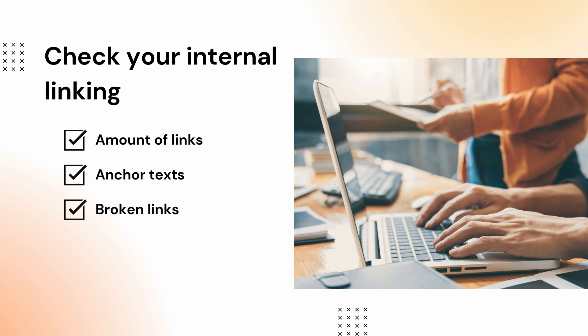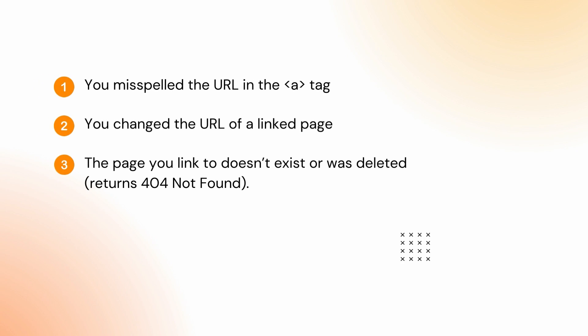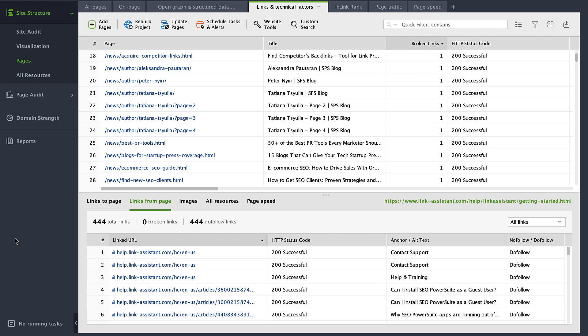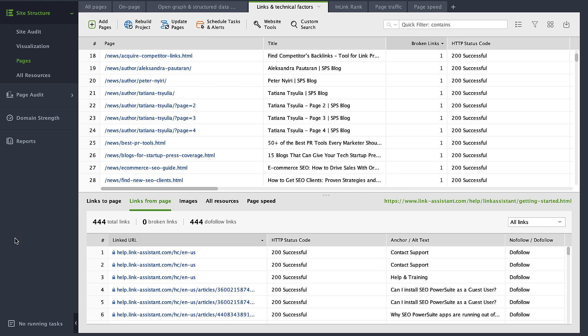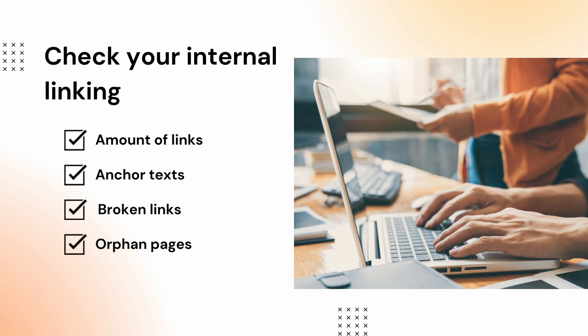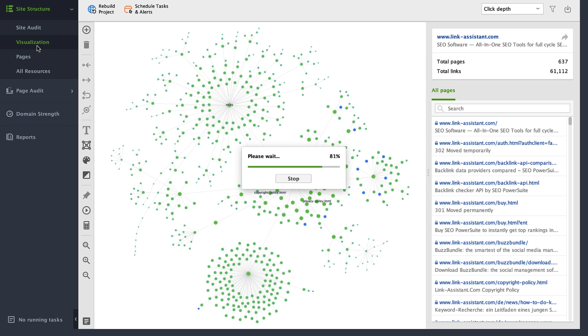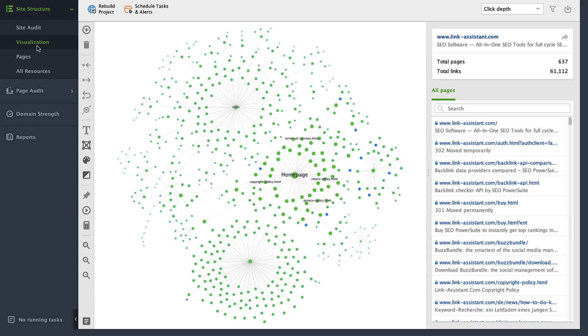Broken links are hard to spot without a special audit. They may appear because you misspelled the URL in an anchor tag, changed the URL of a linked page, or the linked page doesn't exist or was deleted and returns a 404 not found. To find broken links, find the corresponding column in the pages report in Website Auditor. Finally, check for orphaned pages — pages not linked to — because they may not appear in the Google index. The easiest way is to use the visualization tool in Website Auditor; orphaned pages will be marked in grey.